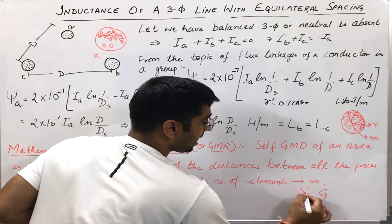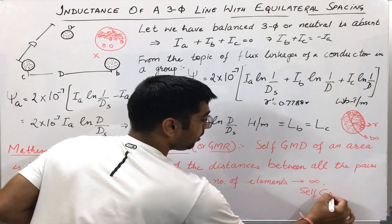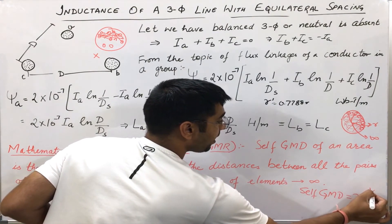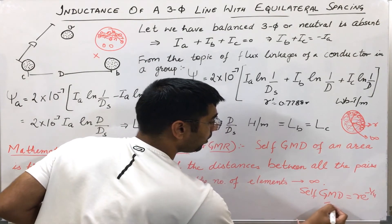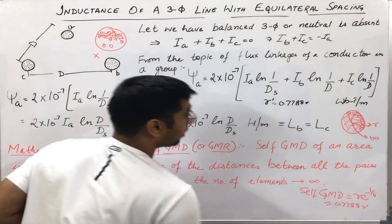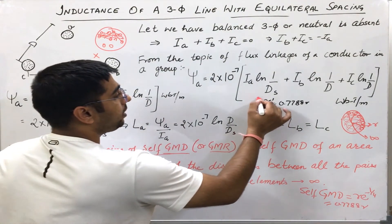then self-GMD will be R times e raised to power minus 1 by 4, or 0.7788 R, which I have already written here.